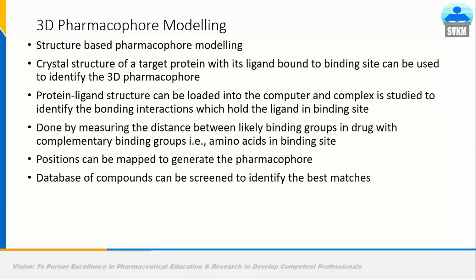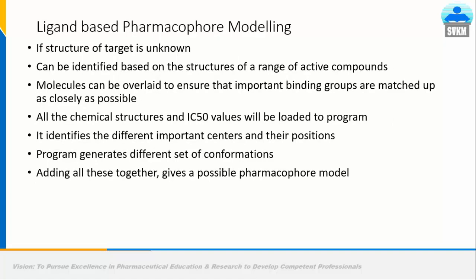3D pharmacophore modeling includes modeling based on three-dimensional features, which also include complementary binding groups responsible for active binding of amino acids to the receptor. Ligand-based pharmacophore modeling is widely used and practiced before carrying out molecular docking studies. Chemicals are selected based on their IC50s, standards, and mechanism of action, and that set of chemicals is treated with a server or software to develop a pharmacophore model. The ideal molecule for biological activity or the best chemical entity is then designed accordingly.